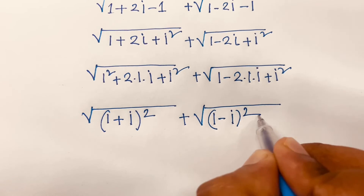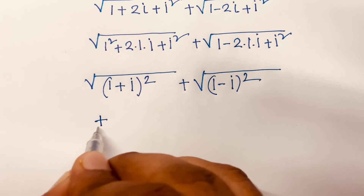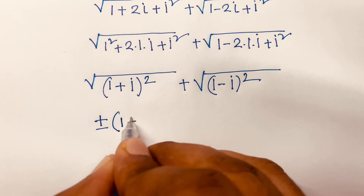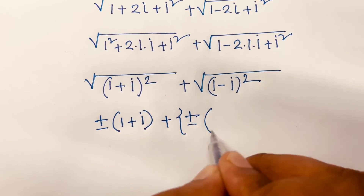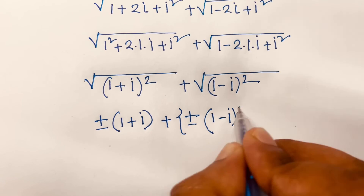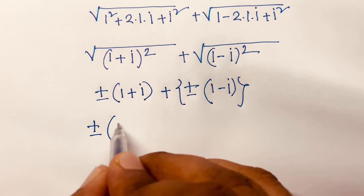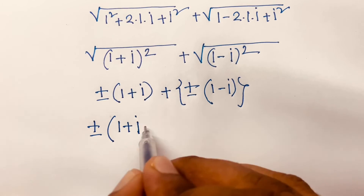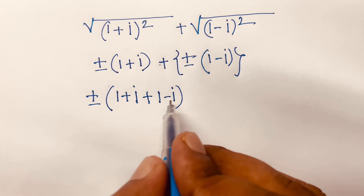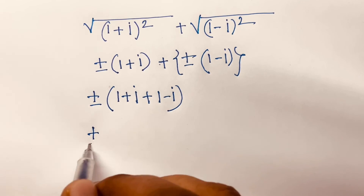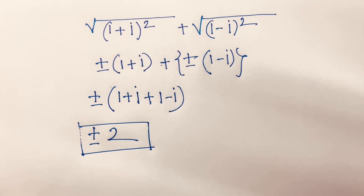The square roots cancel, giving ±(1 + i) ± (1 - i). The i terms cancel, so we get ±(1 + 1) = ±2. This is our final answer.